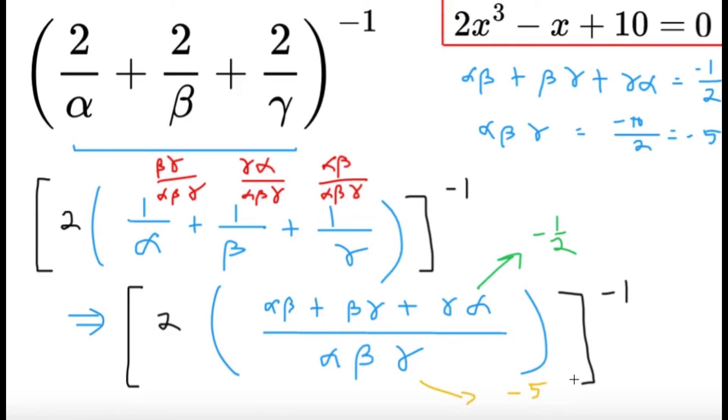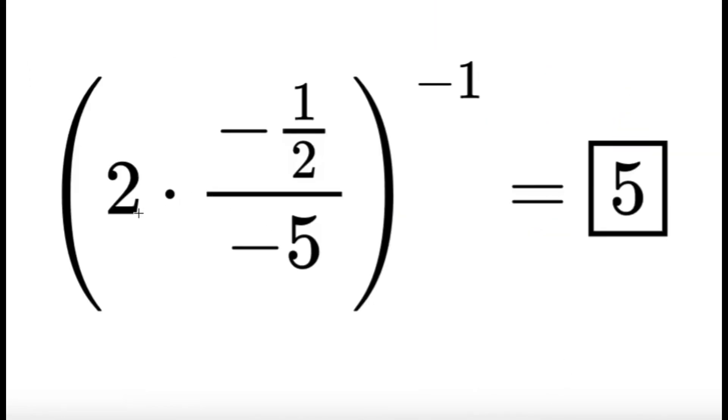It's just a matter of substitution. So substituting the values that we have from Vieta's relations, the two times the negative 1 half here, the two cancels nicely. So essentially, it's just going to be 1 fifth inside the parentheses. We're taking the reciprocal of 1 fifth, and that's the reason why we're going to get the final answer of 5.